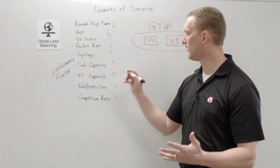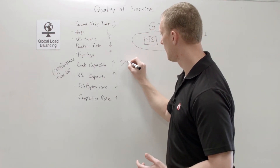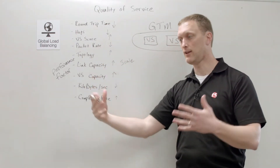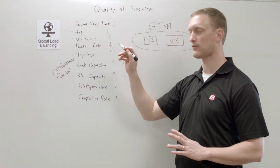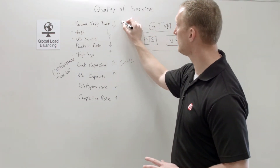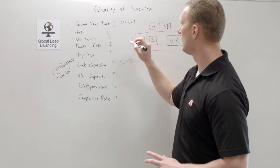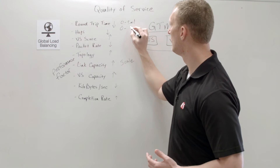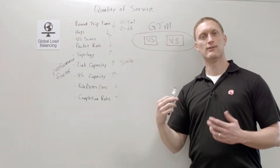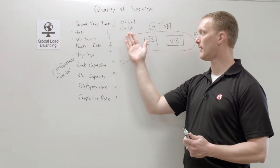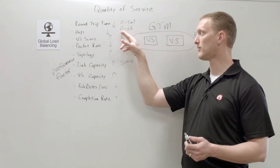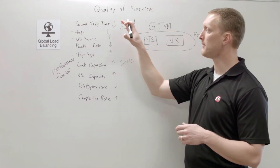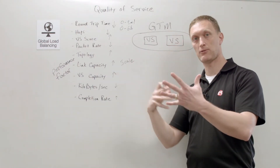Another thing to mention is the concept of scale — each of these factors is not necessarily on the same scale. For example, round trip time is measured on a scale from zero to two million microseconds, whereas hops goes from zero to sixty-four. So if you change hops from zero to one, that will have a more significant impact than changing round trip time from zero to one.